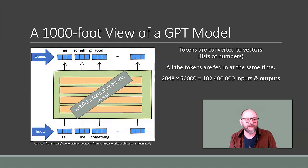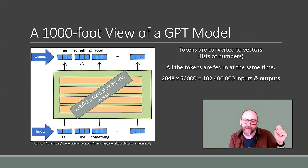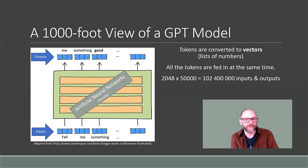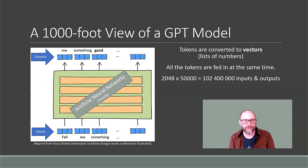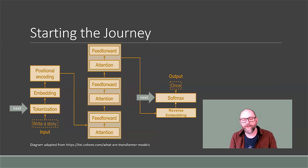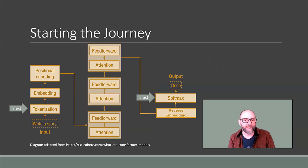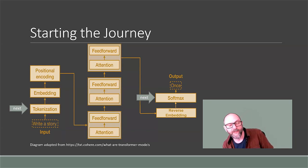So back to our thousand-foot view: tokens are converted into vectors, then they go through a bunch of artificial neural networks, and vectors come out the other end representing the predictions. It amounts to about 100 million inputs and outputs. If the input list is 50,000 numbers per token and GPT-3 can take 2,000 tokens of input, when you multiply that out it's huge numbers. Now we're ready to start the journey — talking about both ends of the network, the tokenization and conversion of words into numbers, and the conversion back from numbers into words.